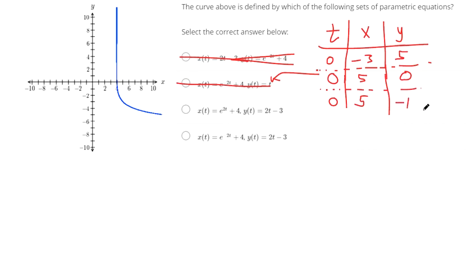Plug in 0 here, you get negative 1 for the y. So at 5 on the x, negative 1 on the y, we should have a dot there. So I think we found our answer.